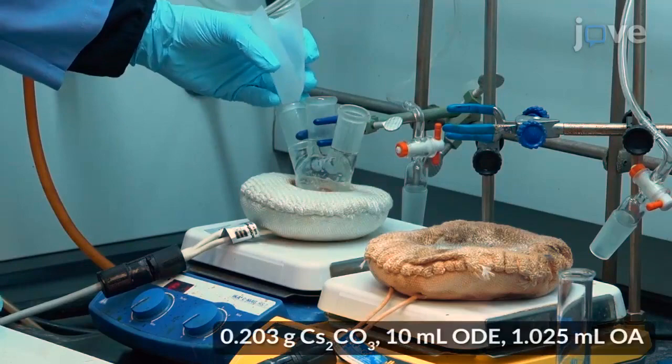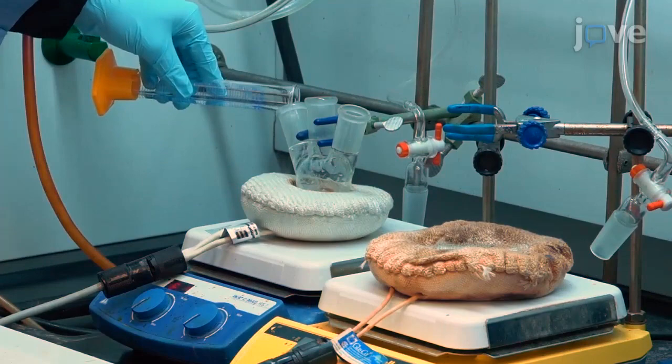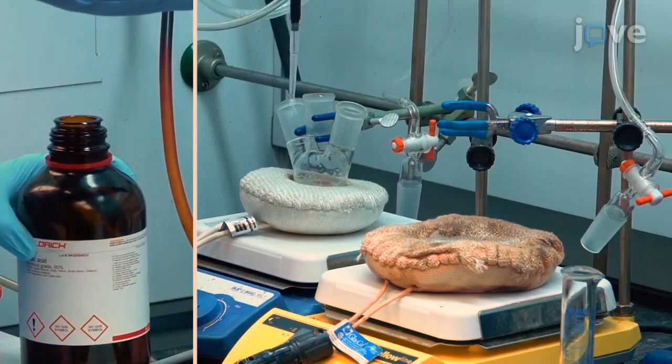To prepare the cesium oleate precursor, add 0.203 grams of cesium carbonate, 10 milliliters of octodescene, and 1.025 milliliters of oleic acid to a three-neck, round-bottom flask containing a 2.54 cm magnetic stir bar.